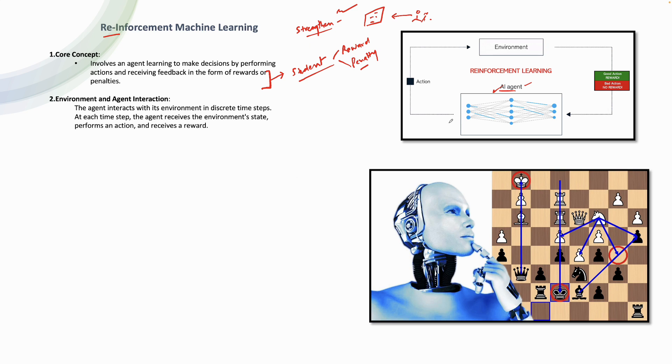As I talked about the AI agent, the AI agent interacts with its environment and each time step, the agent receives the environment state. So you do some actions, you get the state of the environment and based on that, your reward or penalty is decided.